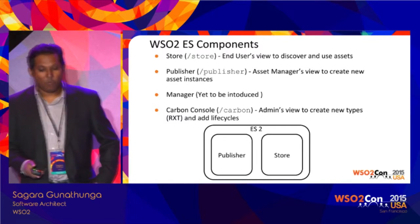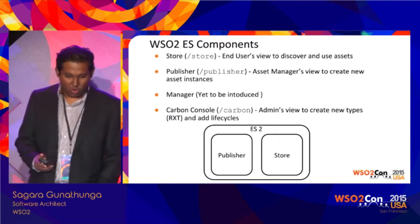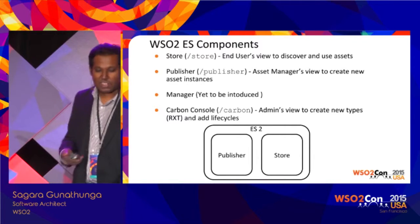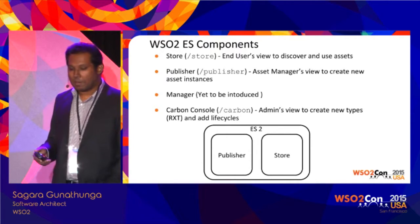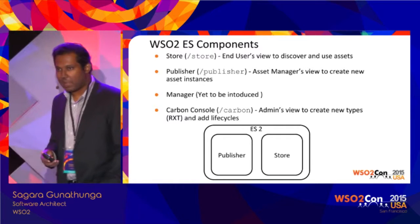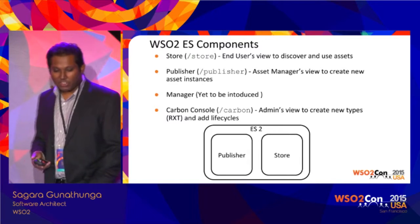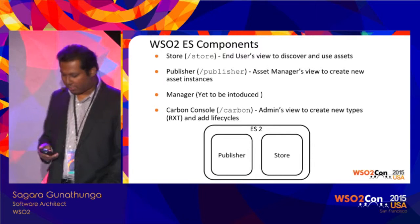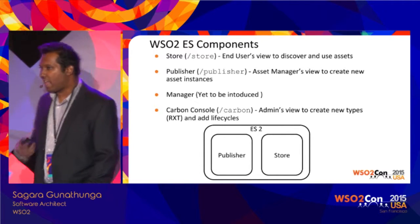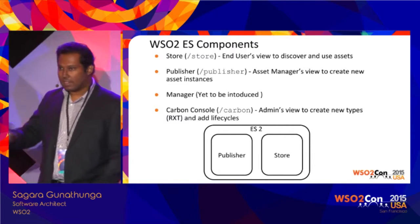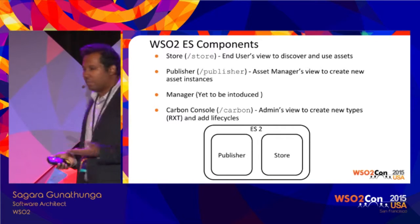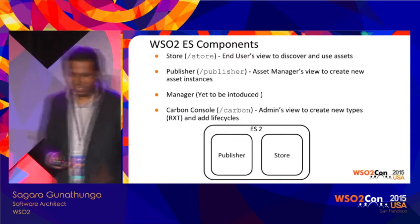There are four main components of Enterprise Store. The first is the Store — the most important one — where your consumers come to find and subscribe to your digital assets. The second is the Publisher, the back office where your authors or officers come to publish or edit assets. The third is the Manager, which is yet to be introduced but is on our roadmap. The fourth is the Carbon Console for administrative tasks. In runtime you find the Publisher and Store, and depending on your requirement you can embed them in the same JVM, or deploy Publisher and Store separately — for example, the Store in the DMZ and the Publisher within your internal network.